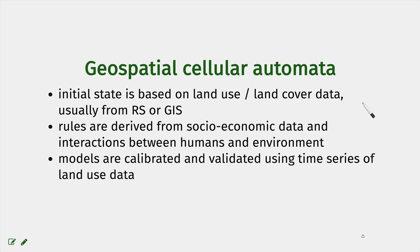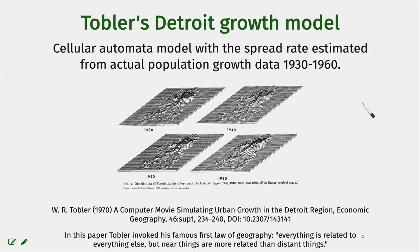With increased availability of remote sensing and GIS data, we can calibrate and validate these models using time series of land use data, as well as population data and other variables. The historically first example of a computational urban growth model based on real data and a real region was driven by population growth data and did not include environmental data.